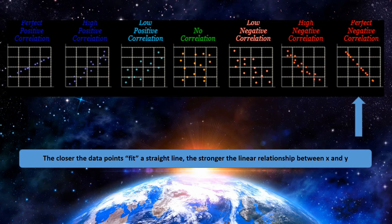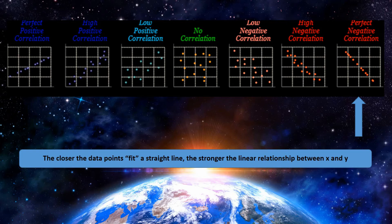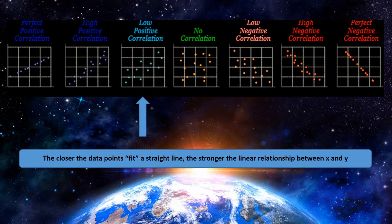Now let's look at what a negative correlation looks like, starting with the perfect negative correlation. Once again all the dots fall on a straight line — making it perfect. The slope of the line is negative, which tells us this is going to be a negative r value. As X increases, Y is now decreasing — they're moving in opposite directions: X is going up, Y is going down.